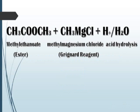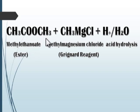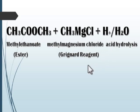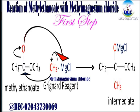Look at this reaction — we have CH3COOCH3, which we call methyl ethanoate; it's actually an ester. When it reacts with methyl magnesium chloride, which is a Grignard reagent, in the presence of acid hydrolysis, what will be the product? That is what this video is going to detail in the next few seconds.